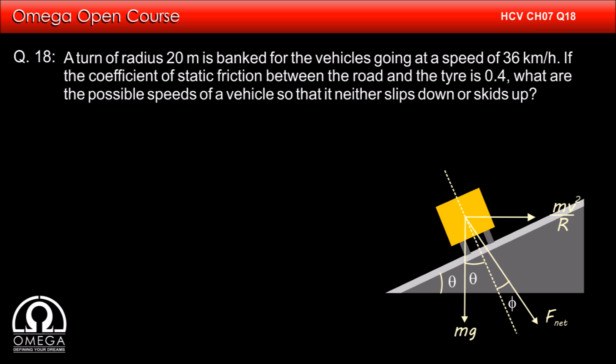In limiting case, F net makes exactly phi with the direction of normal. Therefore, MV square by R divided by MG must be equal to tan theta plus phi.